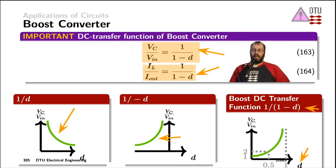We can see when the duty cycle is zero, the DC transfer function of the output voltage divided by the input voltage is 1. At a duty cycle of 0.5, we divide by 0.5 and that gives a DC transfer function of 2. So that means that the output voltage cannot be any lower than the input voltage in a boost converter, but can only rise with the duty cycle.